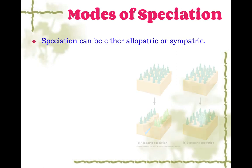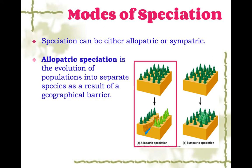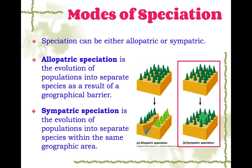Speciation can be either allopatric or sympatric. Allopatric speciation is the evolution of populations into separate species as a result of a geographical barrier — a river, a lake, a mountain — that has separated a group of organisms, and then they evolve separately and become new species. Sympatric speciation is the evolution of populations into separate species within the same geographic area; they're still in the same area, but something else has caused them to be separated from each other and become a new species.